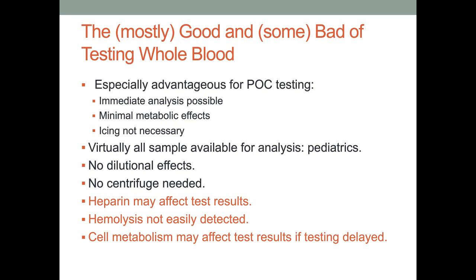Heparin can affect results depending on how much we fill the tube. If we fill the tube half full, we double the heparin concentration or any anticoagulant or glycolytic agent in the tube or syringe. With whole blood, hemolysis is not easily detected — a very significant issue. Cell metabolism may affect test results if testing is delayed; if there is any delay, you will get more metabolic effects.